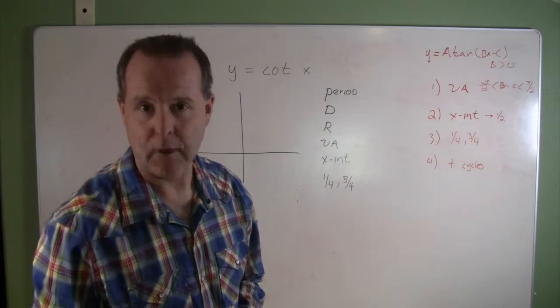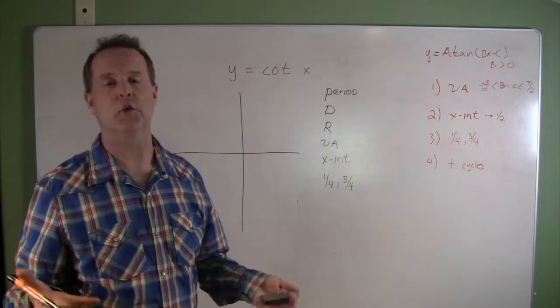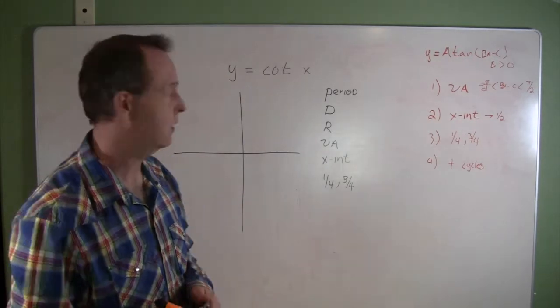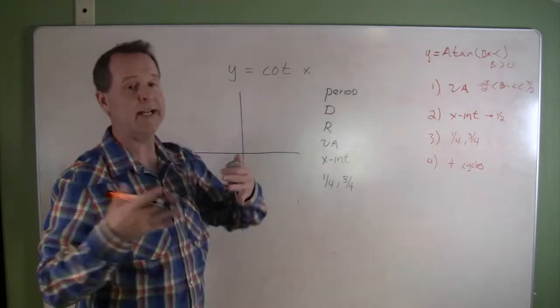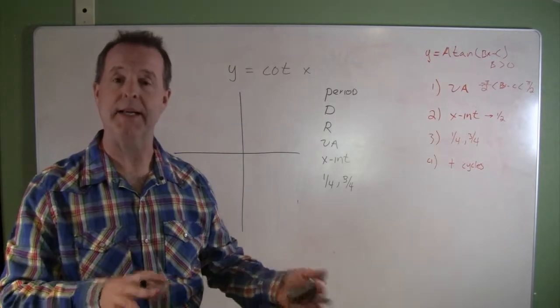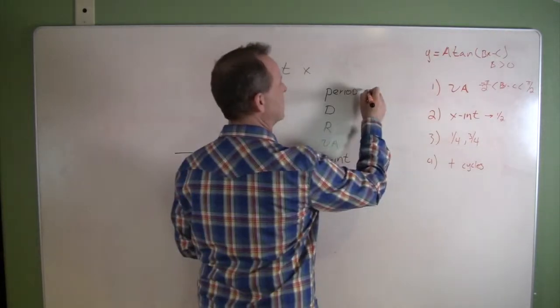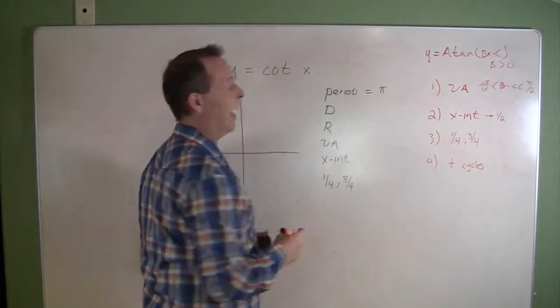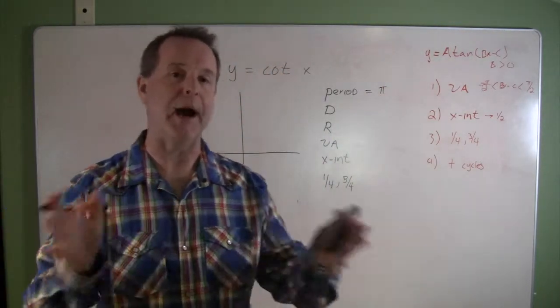Let's look at the cotangent graph and give you some characteristics of what the basic cotangent graph will look like. First of all, let's identify what its period is. Its period is the same as tangent, which is π, so it repeats itself every π units.